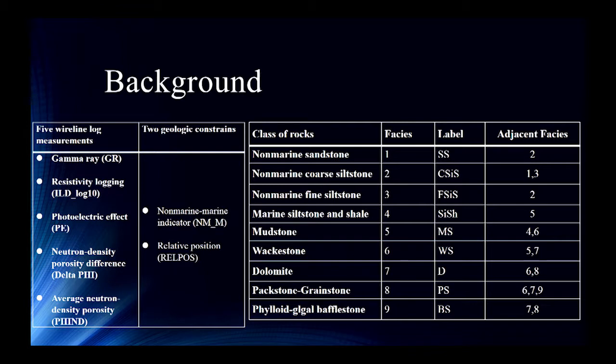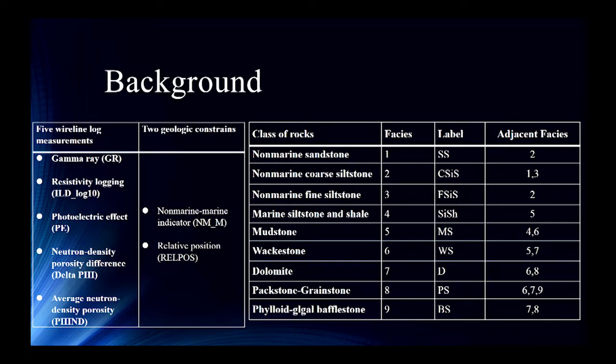And on the right-hand side, you can see the nine different rock facies labels. And we use one to nine to label them. And this is the short label for each type. And also this adjacent facies, you can think of this as tolerance for your interpretation because between two different types of rocks, there is a transaction zone. So if you interpret one to be two, in some sense, it's acceptable. For example, for the second one, you can interpret to be the first one or the third one. But for our project, we didn't count this into the accuracy because if we count that, that accuracy will be much higher.